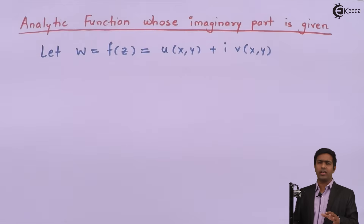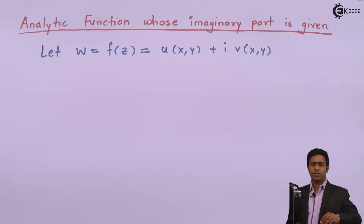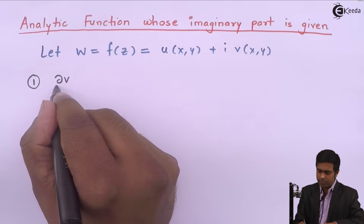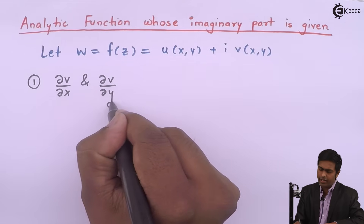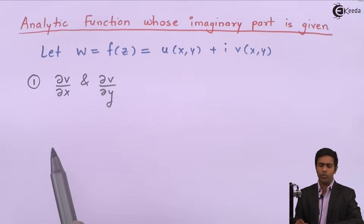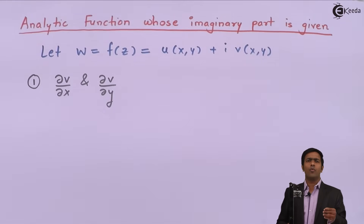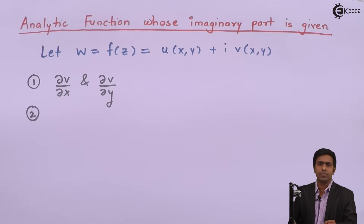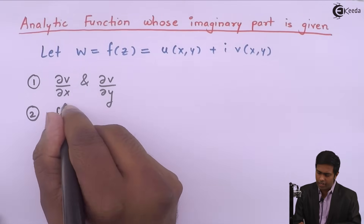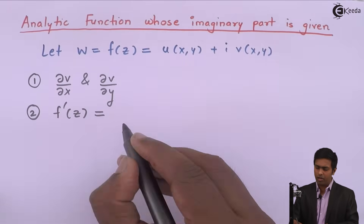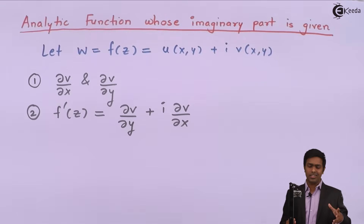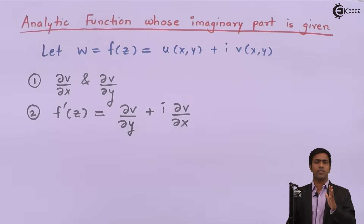There are certain cases in numericals where the imaginary part v is given and you are asked to find the analytic function f(z). So if u is not given, how do we get f(z)? In step one, we find the values of ∂v/∂x and ∂v/∂y by partially differentiating v with respect to x and y. After that, we use the property: if f(z) is analytic, then its derivative f'(z) is given by ∂v/∂y + i·∂v/∂x.